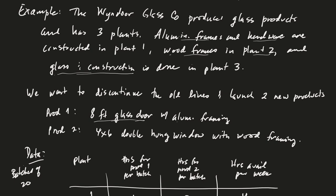The idea is that we want to discontinue some old line and launch two new products. So we have three plants and two products. Product one is an eight-foot glass door that has an aluminum frame. Product two is going to be a four by six foot double-hung window with wood frame. If we're going to build an eight-foot glass door with an aluminum frame, you can see here that we're going to have to use plant one to construct the aluminum frame and the hardware, and then we'll have plant three do the glass and construction. Similarly, for the double-hung window, we'll have to have plant two construct the wood frames, and then plant three do the glass and final construction.